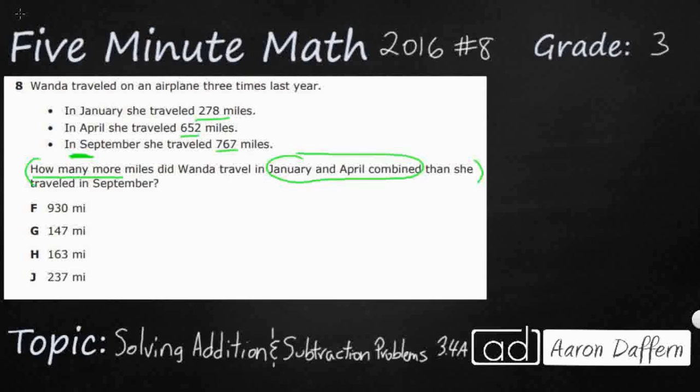So we've got a problem within a problem. January and April combined, so we need to first combine January and April. Let's see what happens when we do that.